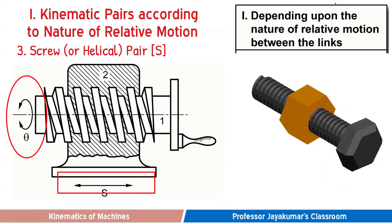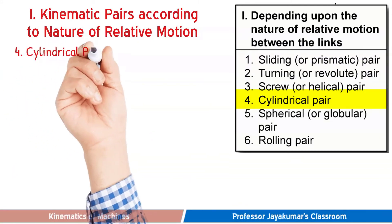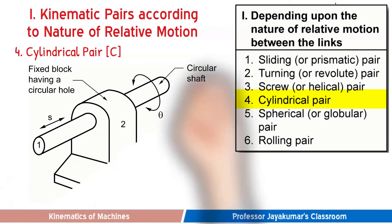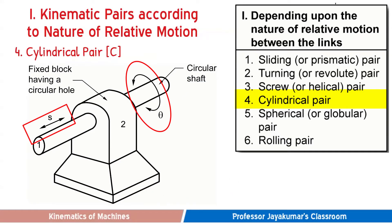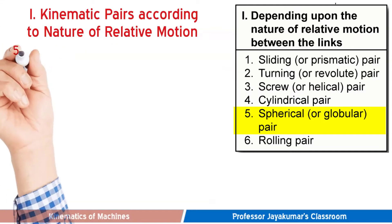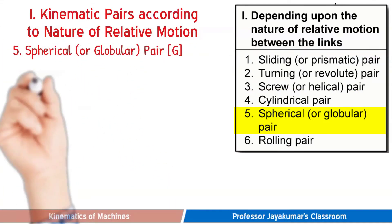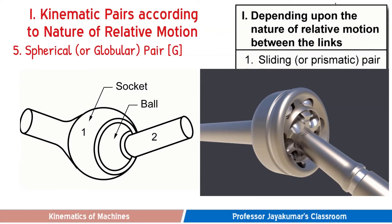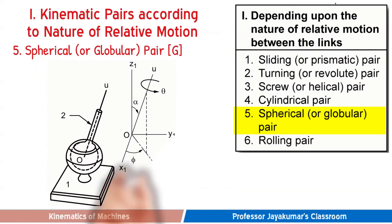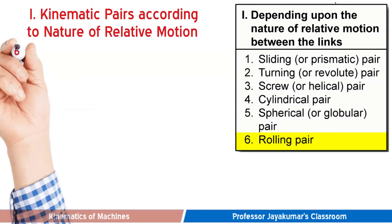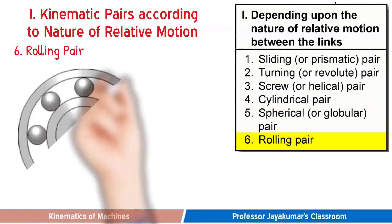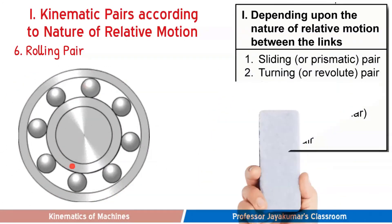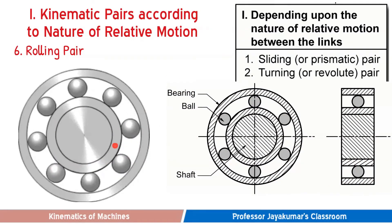The fourth type is the cylindrical pair, which allows both translation and rotation motion — as seen in the diagram, links one and two form a cylindrical pair. The fifth type is the spherical or globular pair, where one link is constrained to swivel about a fixed point — a ball and socket joint represents the spherical pair. The sixth type is the rolling pair: when one link is free to roll over the other, it forms a rolling pair. A ball and roller bearing forms a rolling pair.